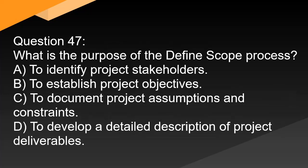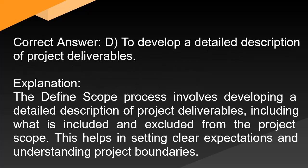Question 47: What is the purpose of the define scope process? A. To identify project stakeholders. B. To establish project objectives. C. To document project assumptions and constraints. D. To develop a detailed description of project deliverables. Correct answer: D. To develop a detailed description of project deliverables. Explanation: The define scope process involves developing a detailed description of project deliverables, including what is included and excluded from the project scope. This helps set clear expectations and understand project boundaries.